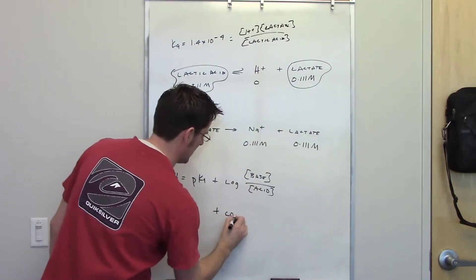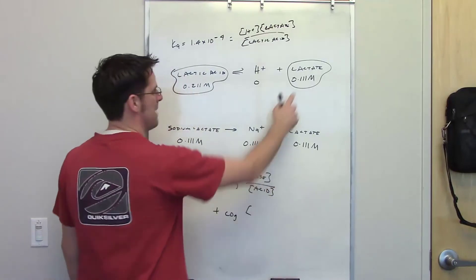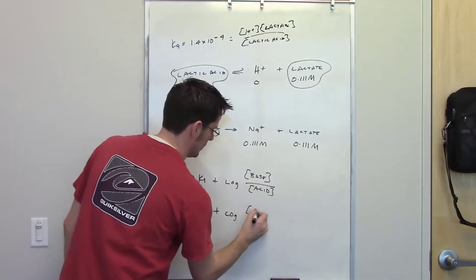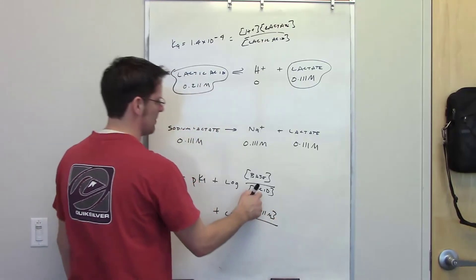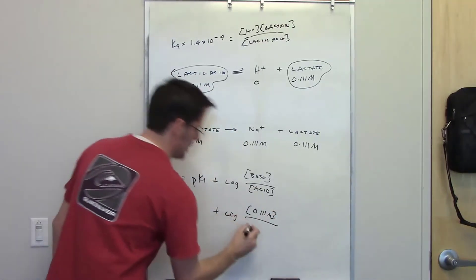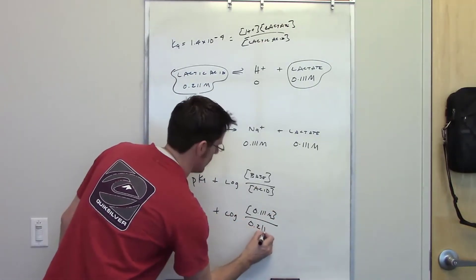So what I do is I put these numbers in for their respective locations here. In other words, I've got log of the base's concentration at initiation, which is 0.11 molar, divided by the acid's concentration at initiation, which is 0.211 molar.